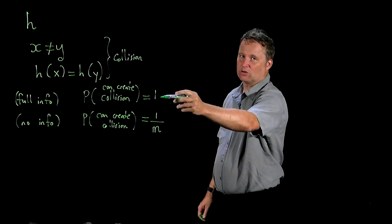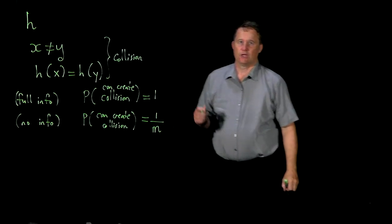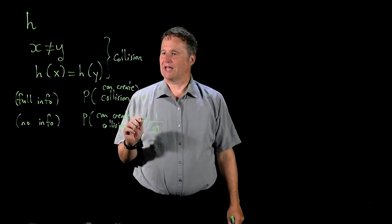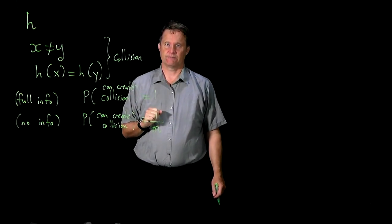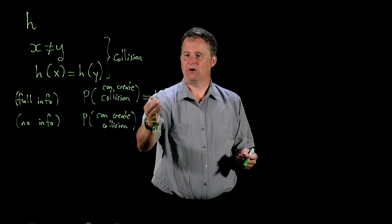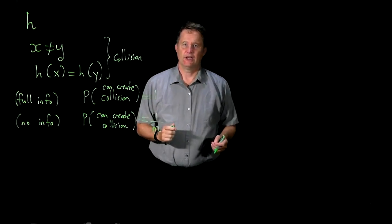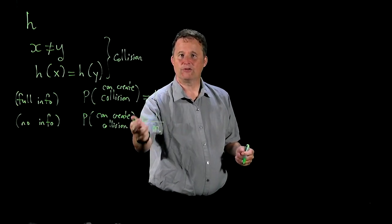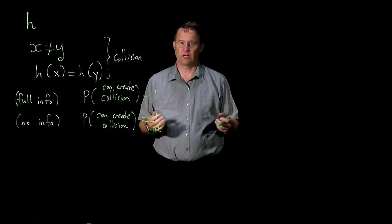This — having full information — however, is going to cause a lot of problems, and that's something we want to avoid. The idea we're going to use is that we choose the hash function randomly from a set of possible hash functions. That's going to reduce the collision probability way below 1. And if we're lucky, we'll get it down to 1 over M. Today I'm going to show an example where we get down to at worst 2 over M, which is still very small for a large-sized table.